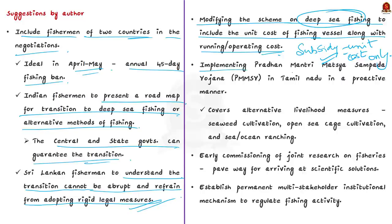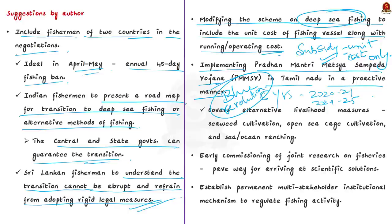The next suggestion is implementing Pradhan Mantri Matsya Sampada Yojana in Tamil Nadu in a proactive manner. This scheme is launched for five years from fiscal year 2020-21 to 2024-25 after the ending of Blue Revolution scheme. It aims to bring Blue Revolution through sustainable and responsible development of fisheries sector in India. It covers alternative livelihood measures like seaweed cultivation, open sea cage cultivation, and sea or ocean ranching.